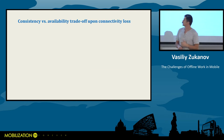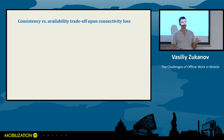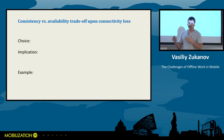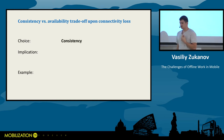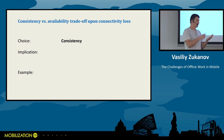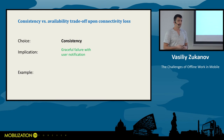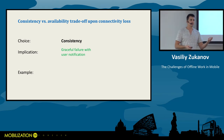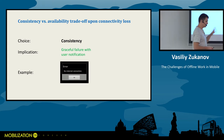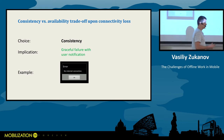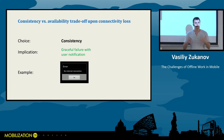What does it mean to choose consistency or availability when there is no network? If we choose consistency, our application either shows the latest available state or shows error indication. When offline, we can't show the latest state in the system, so we show a graceful failure with user notification. That's what consistency means — you tell the user the truth: 'I can't reach my backend now, sorry.' And hopefully you'll do it more user-friendly than that — tell the user something actionable, like you need to retry or enable internet connection.